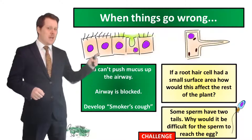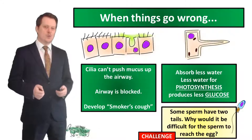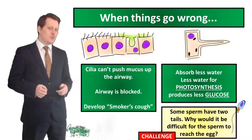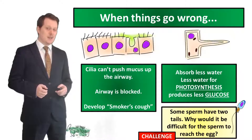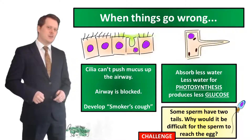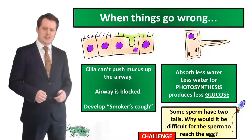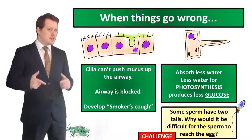If the root hair cell had a smaller surface area, it would absorb less water. Because it's absorbing less water, it will conduct less photosynthesis, and because there's less photosynthesis the plant will produce less glucose. If you're unsure how less water leads to less photosynthesis, check out the photosynthesis lesson — the link is in the description below.